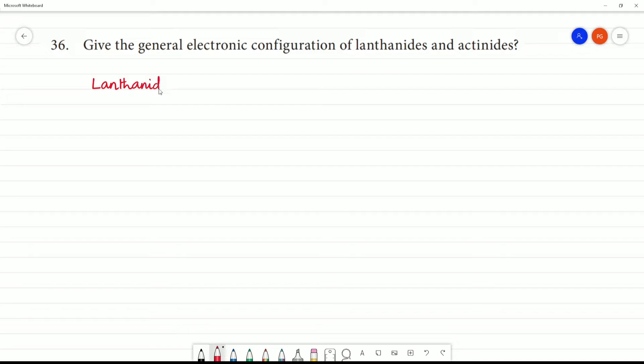Lanthanides. So this belongs to what group, what period? This is 6th period. Okay, this is 6th period. So we have 6s. Clear. 6th period. This is n value. n is equal to 6.